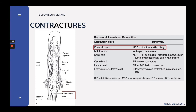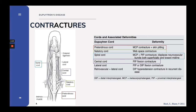Discussing the contractures: the pre-tendinous band turns into the pre-tendinous cord and causes MCP contracture. The natatory ligament turns into the natatory cord and is a cause of web space contracture. Grayson's ligament, the lateral digital sheet, the pre-tendinous band, and the spiral band all contribute to form the spiral cord, which causes MCP and PIP joint contracture. The spiral cord can displace the neurovascular bundle proximal, midline, and volar. The central cord, an extension of the pre-tendinous cord, is responsible for PIP joint contracture. Finally, the lateral cord causes PIP or DIP flexion contracture. DIP hyperextension can be caused by the retrovascular and lateral cord, which are not seen here.